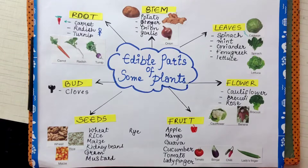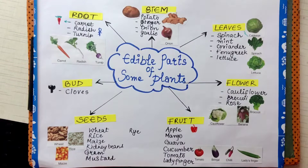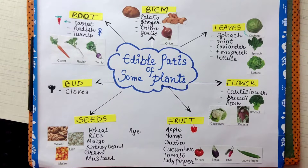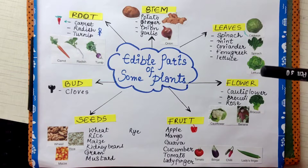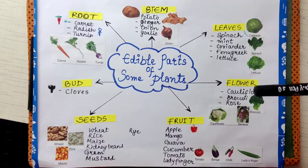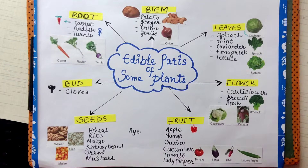Some stems are edible. There are a lot of stems but I have pointed out a few examples. The potato, the ginger, the onion, the garlic — also called aloo, pias, and adruk.